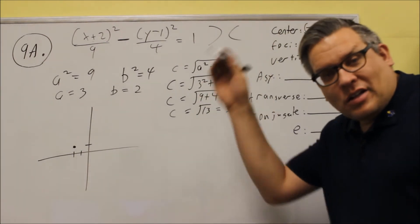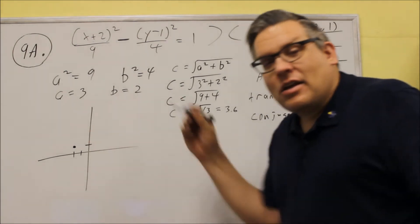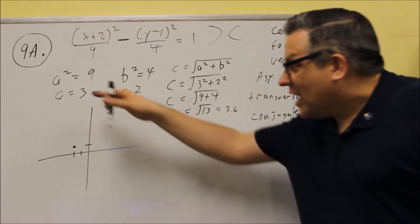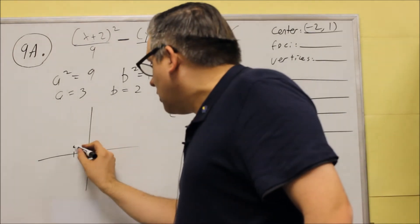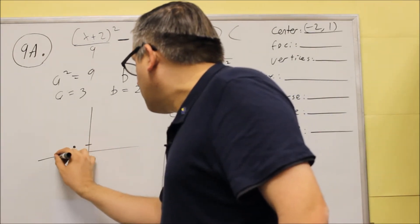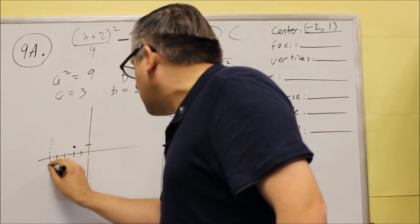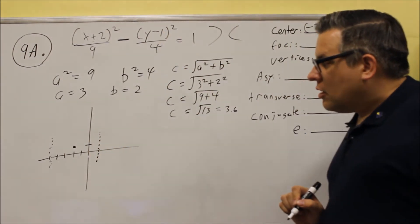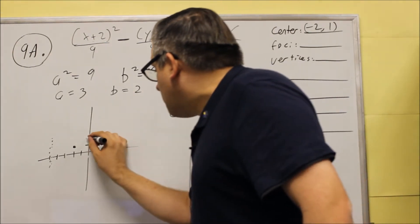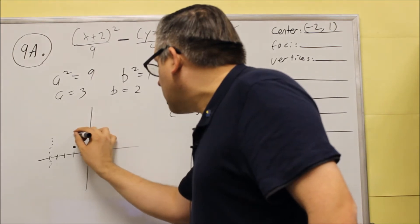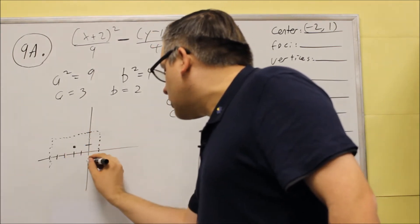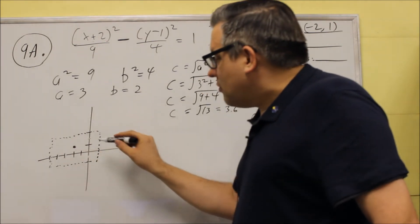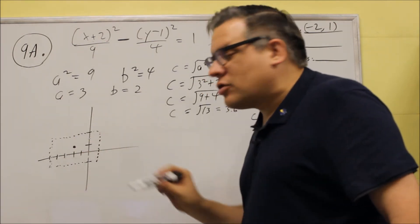For hyperbolas, we need to make that dotted line box around it. The a always goes in the direction that it opens up. It doesn't matter which one's bigger or smaller. A always goes in the direction it opens up. So from the center here, I'm going to go to the left 3. And I'll have a dotted line over there. And I'm going to go to the right 3. And I'll have a dotted line over here. Now going up and down, the b is 2. So I'm going to go up 2 here. So that means I'll have a dotted line going across there. I'm going to go down 2, down to here. And I'll have a dotted line going there.